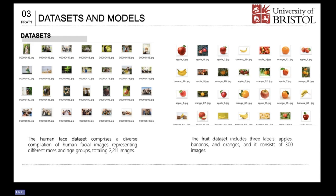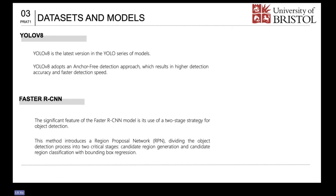Next, let's introduce the two models used. First, YOLOV8 is an object detection model representing the latest version in the YOLO series. YOLOV8 employs an anchor-free detection approach. The Faster R-CNN model is considered a classic object detection model. Its notable feature is the use of a two-stage strategy for object detection, dividing the object detection process into two key stages: candidate region generation and candidate region classification with bounding box regression.